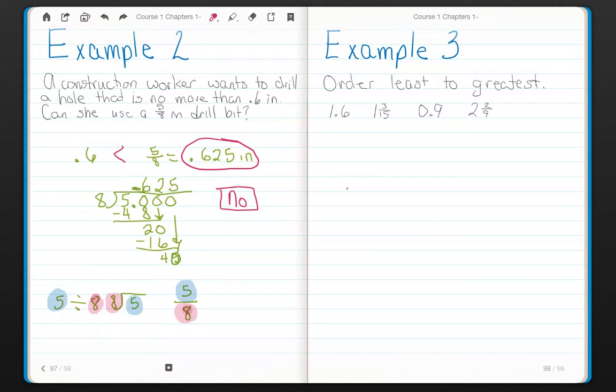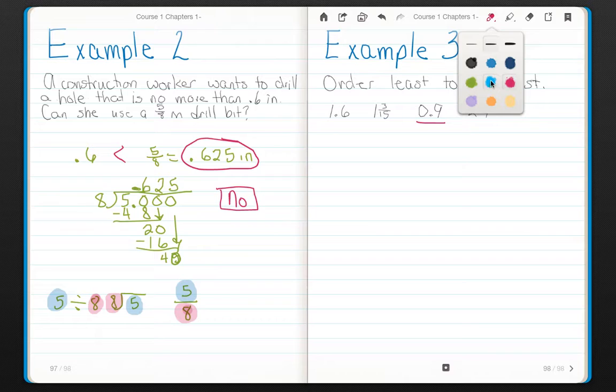Example 3. Order from least to greatest. 1 and 6 tenths, 1 and 3 fifteenths, 9 tenths, and 2 and 2 ninths. Well, 2 of these are going to be fairly obvious. This one is less than 1. This one is greater than 1. So they're going to go first. So this will be my answer. 0.9 will be first. Then I'll have another number. And then I will end with 2 and 2 ninths.